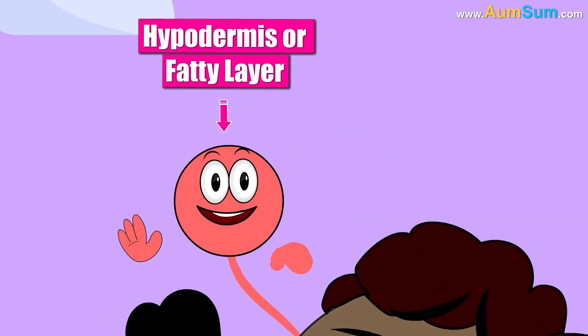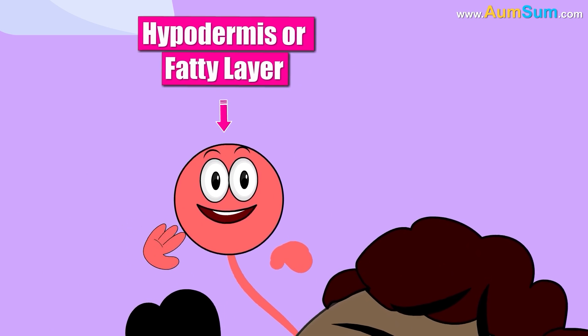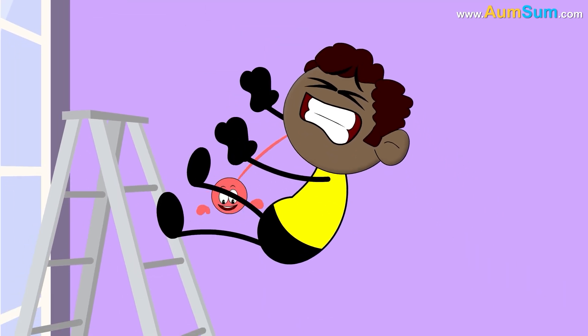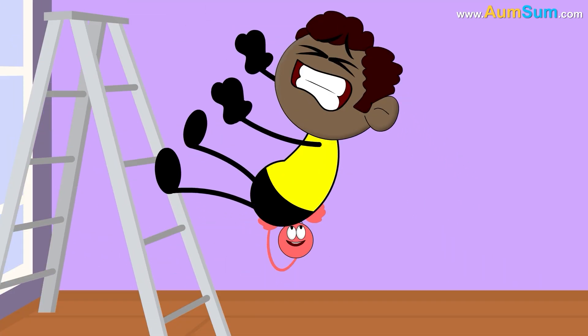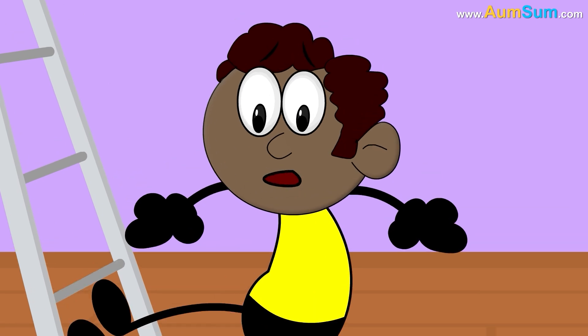The hypodermis, or fatty layer, is the bottom-most layer of skin. It protects our bones and muscles from injuries during a fall.